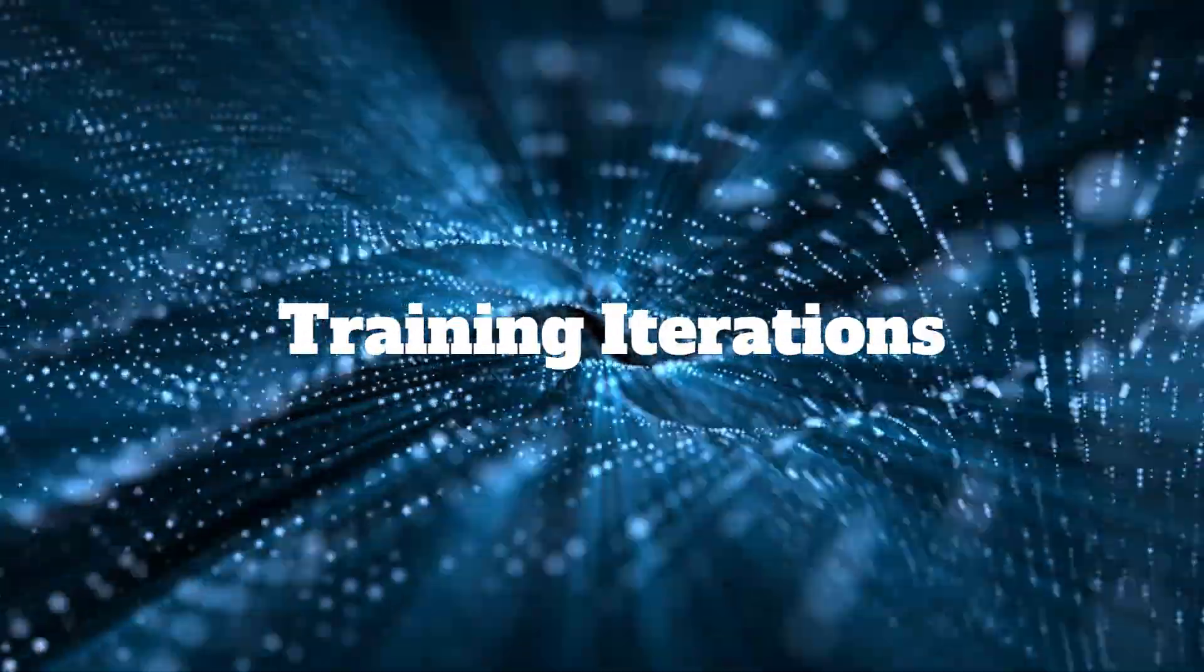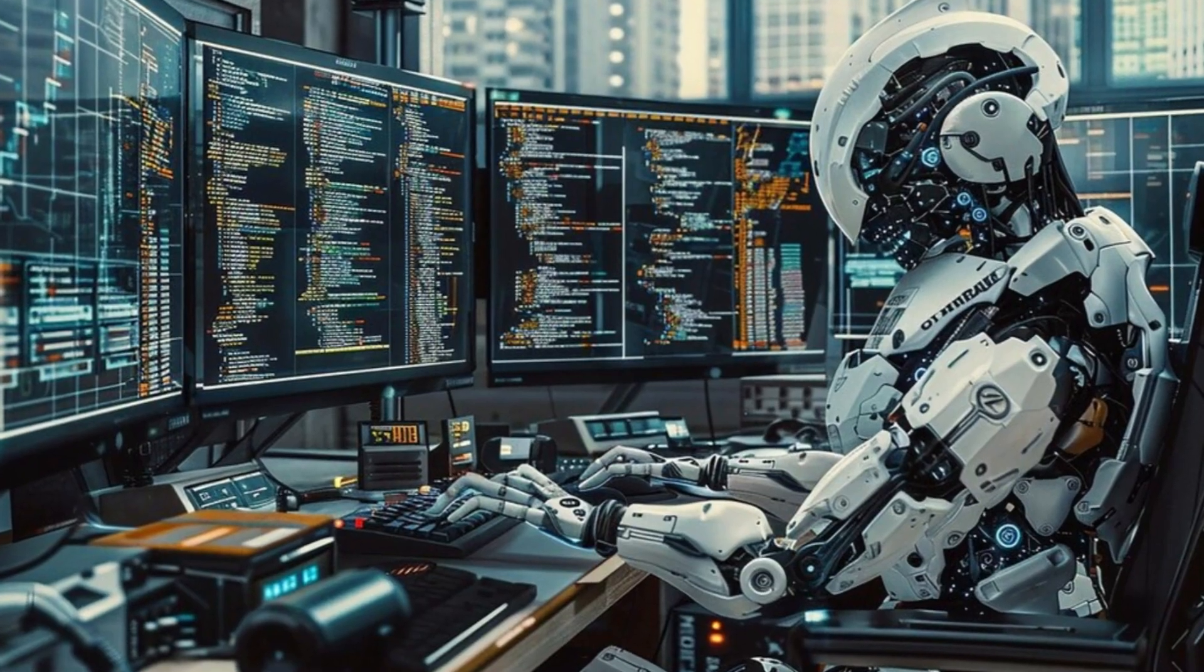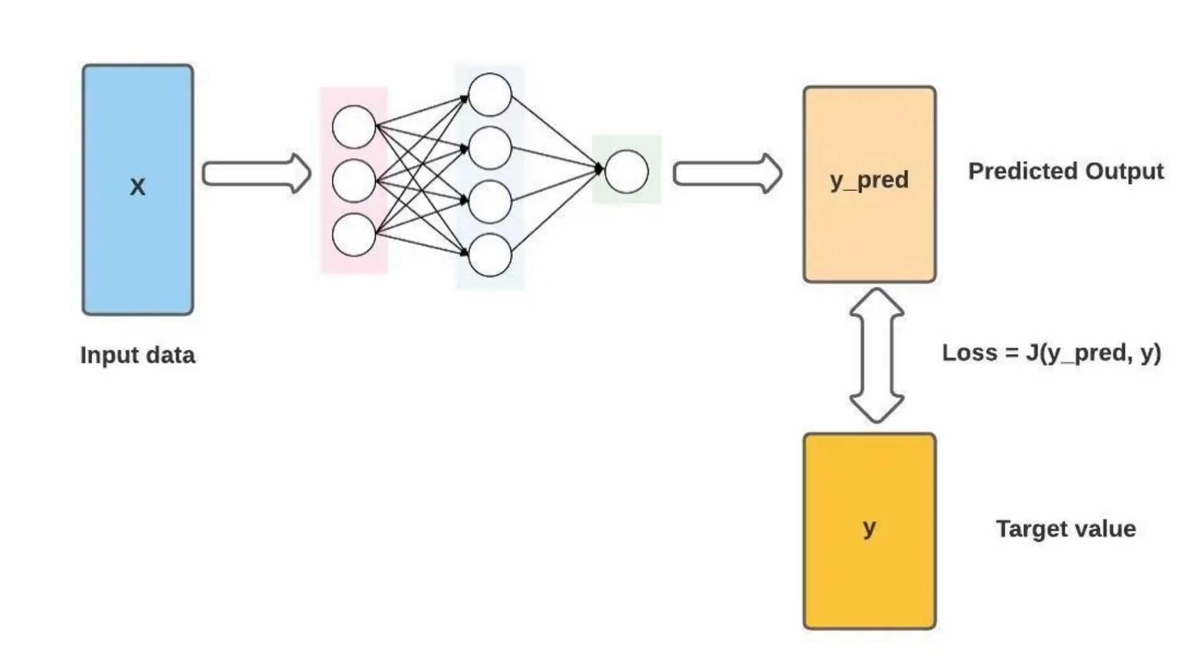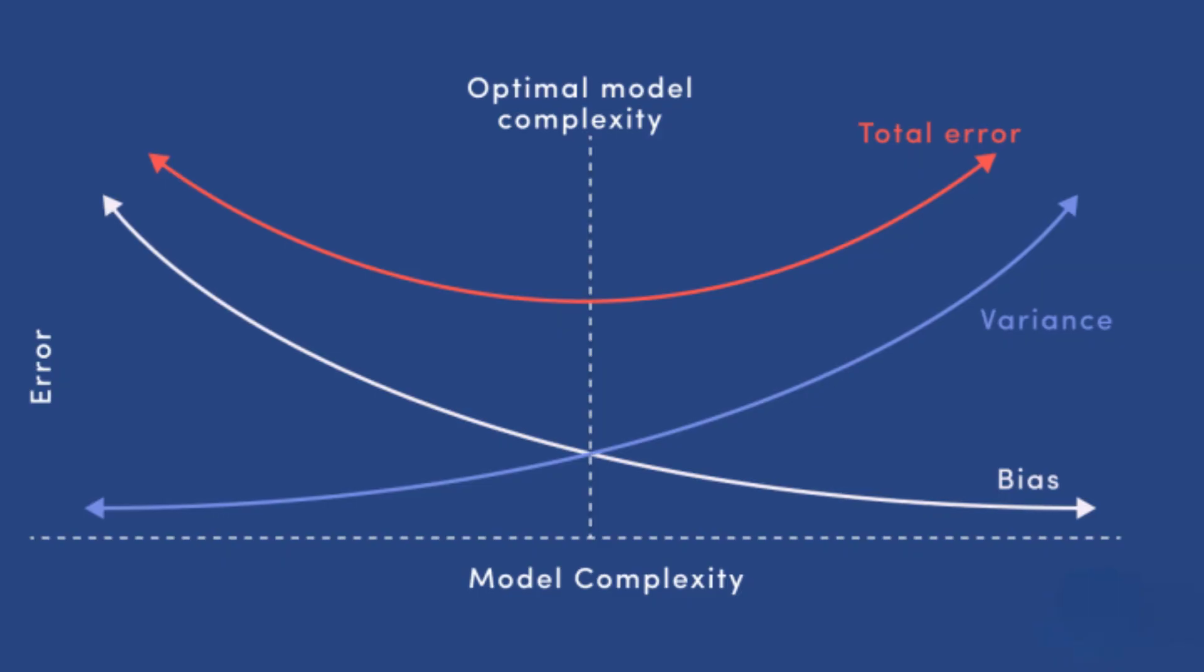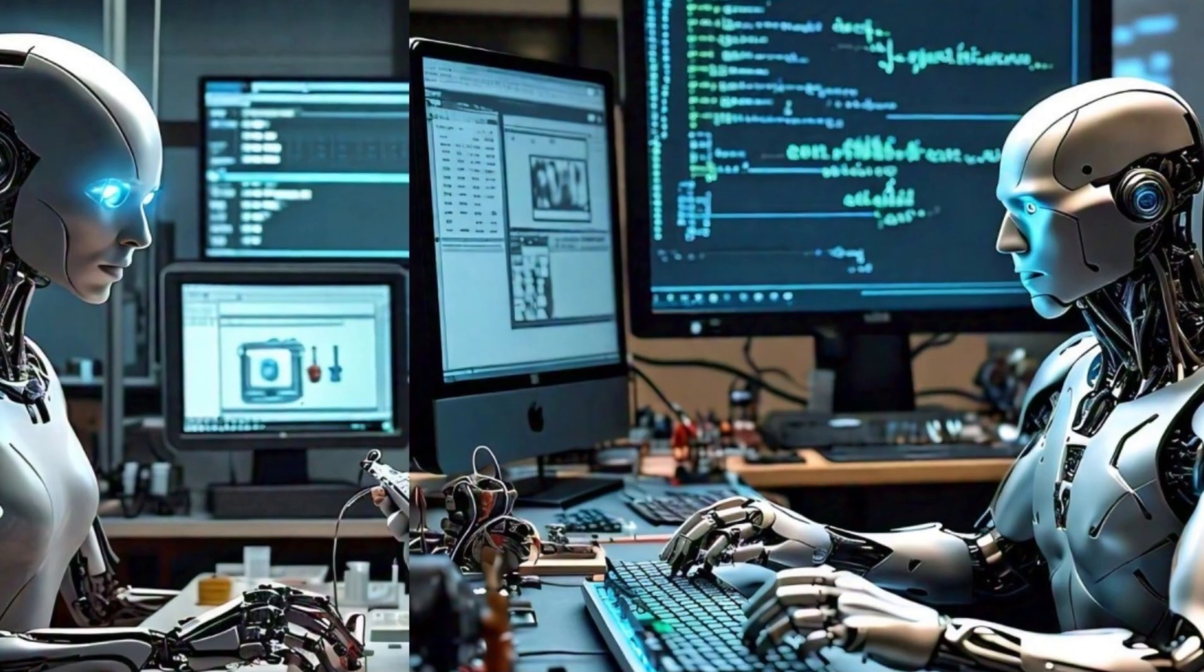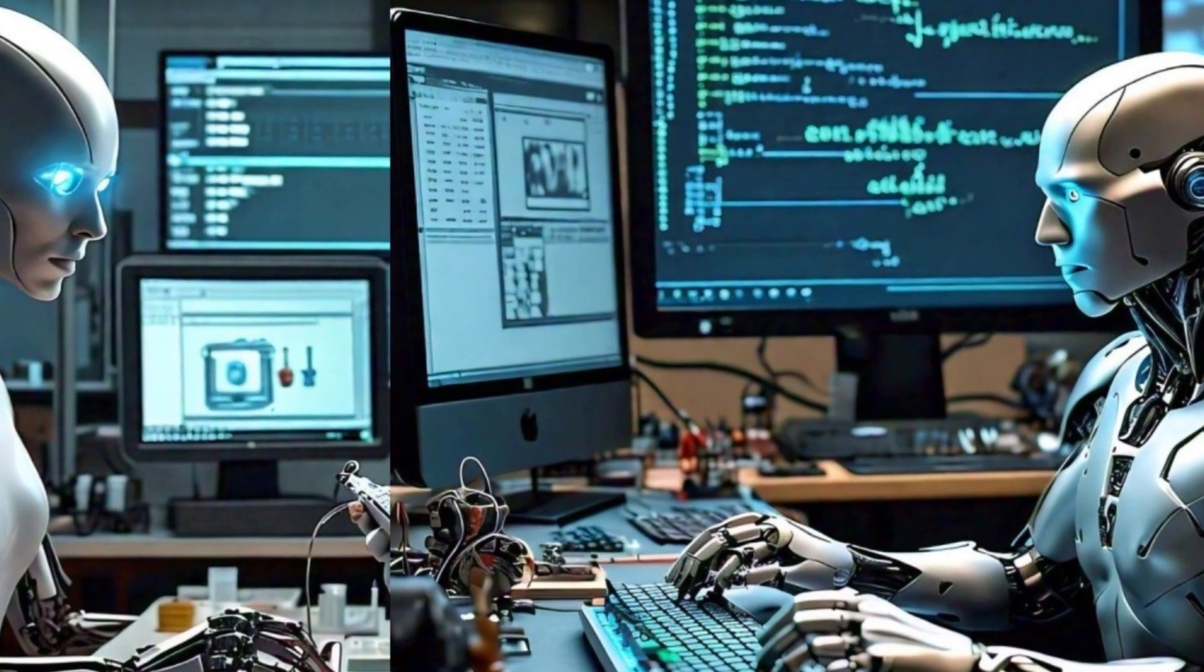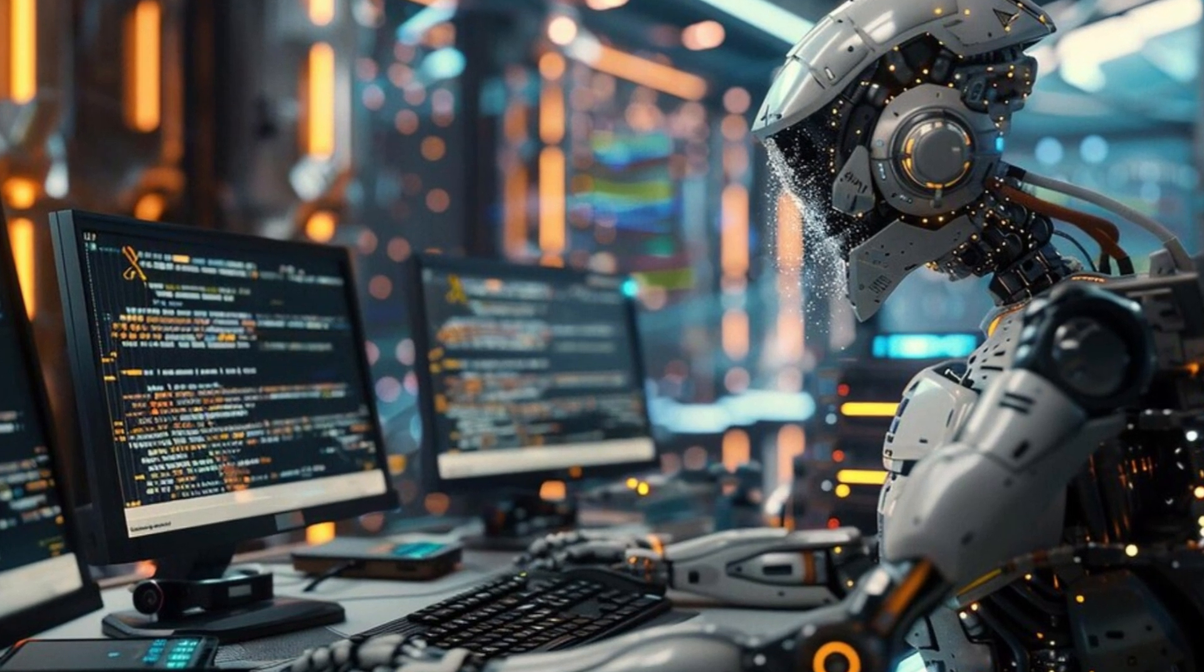The training process involves iteratively feeding batches of data through the network, calculating the loss, performing backpropagation to update the parameters, and adjusting the model's weights and biases to minimize the loss. This process continues until the model converges to a satisfactory level of performance or until a stopping criterion is met.